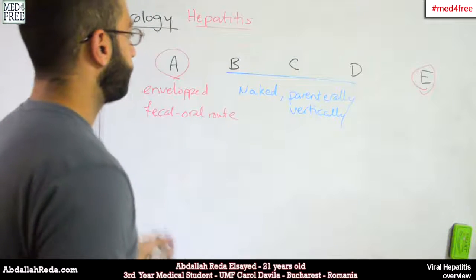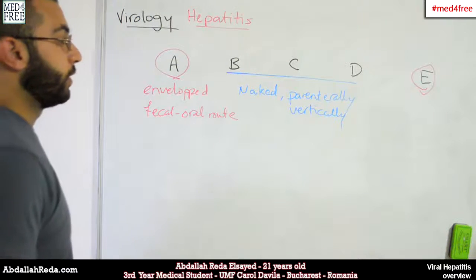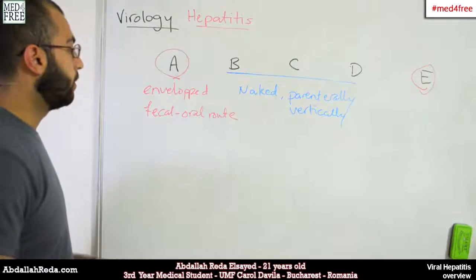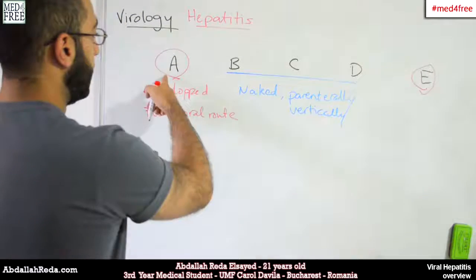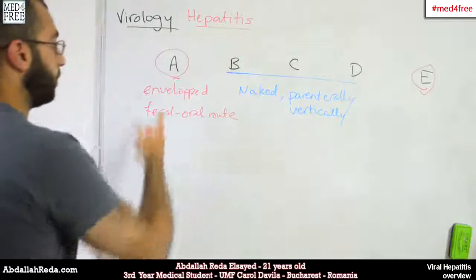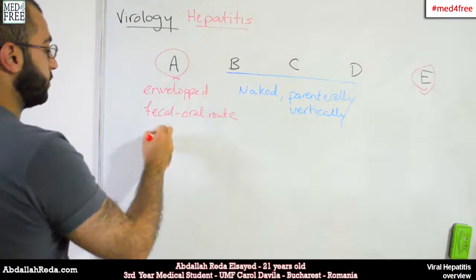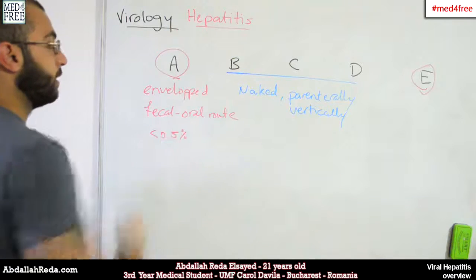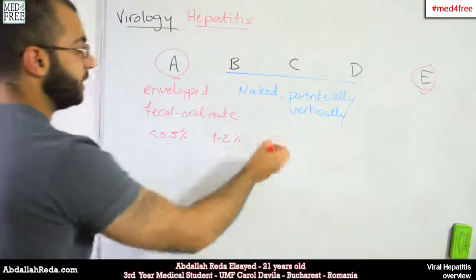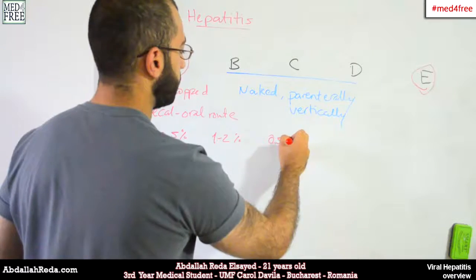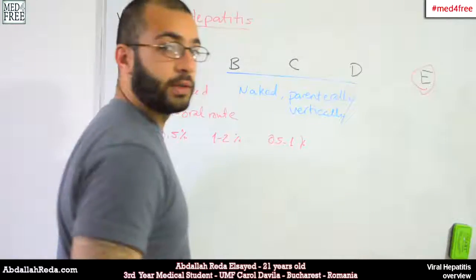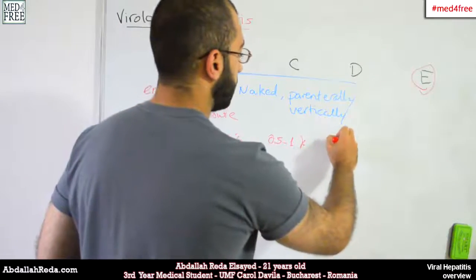Now, mortality rates. Mortality rates for A, B, and C are low. For A, it's less than 0.5%. For B, it's around 1 to 2%. For C, it's around 0.5 to 1%. For D and E, mortality rates are high.